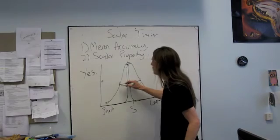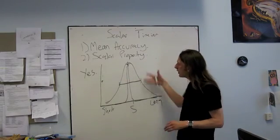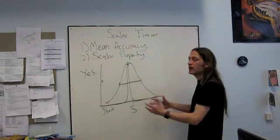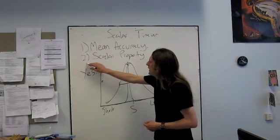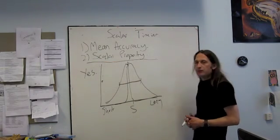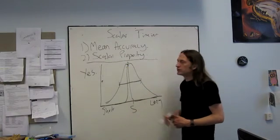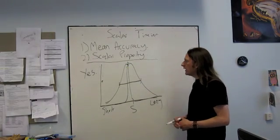So by looking at a temporal generalisation graph, we can look at how variable people are. But in a temporal generalisation task, we'd like to be able to test this scalar property. And in order to do that, we need to run the experiment twice.